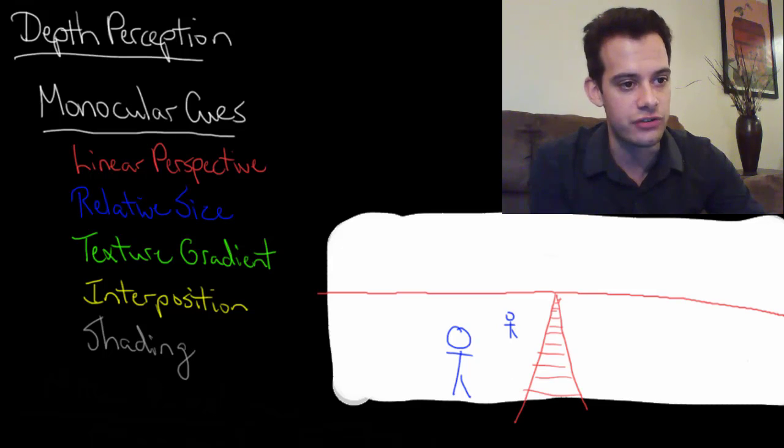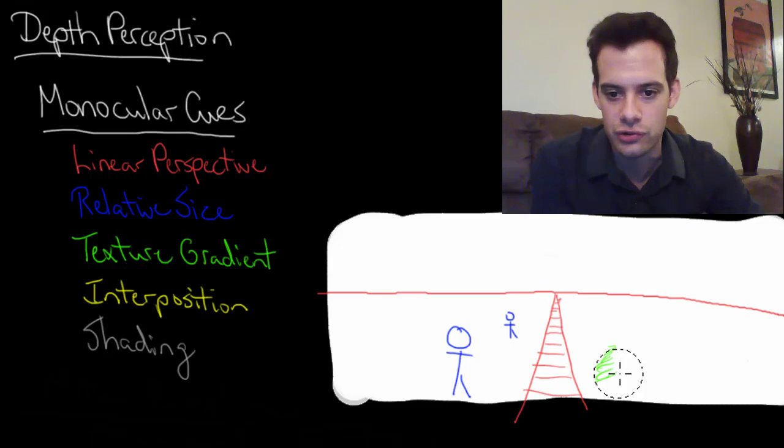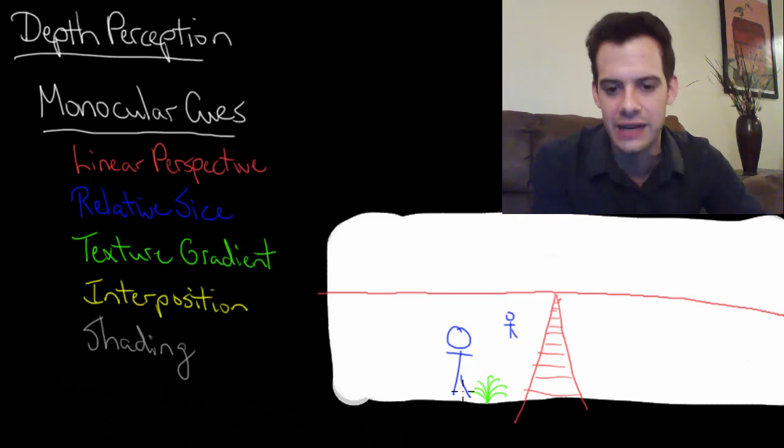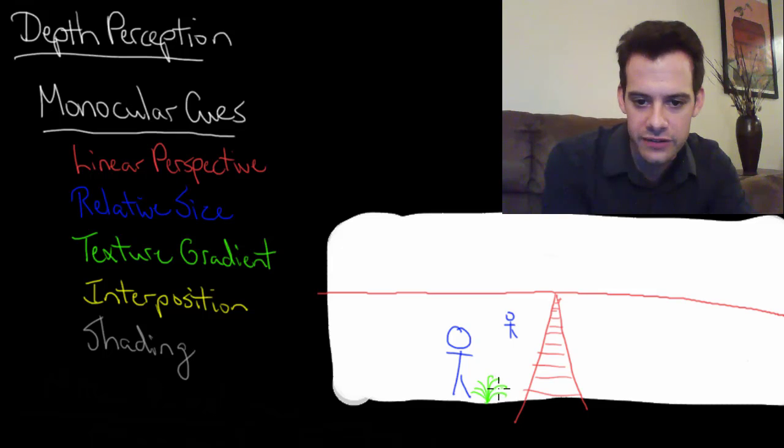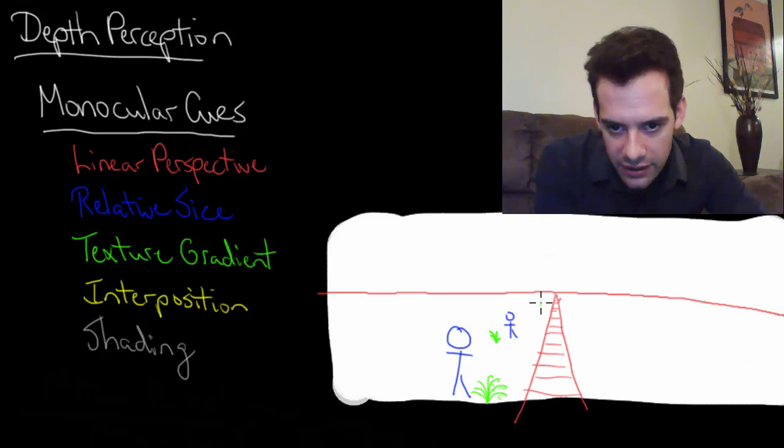Now let's add some texture gradient. Let's do a little plant here. If we imagine some plant close to us, we can see all of the details. We can see individual leaves on there maybe. We can see the veins on the leaves. I'm not able to draw this in great amount of detail. Whereas the plant back here is just kind of a little bit less detailed and the one over here is just like a green spot.